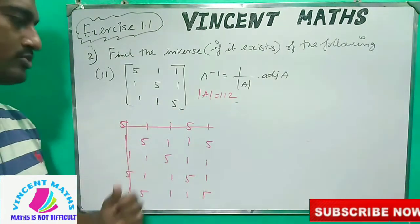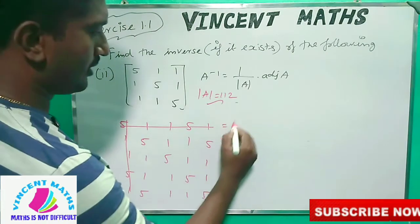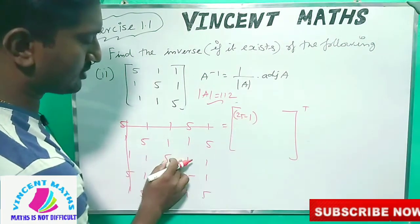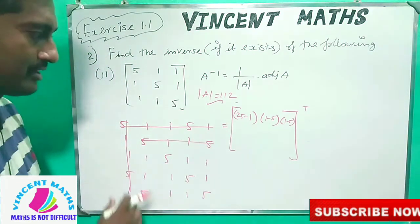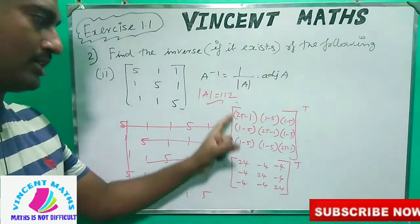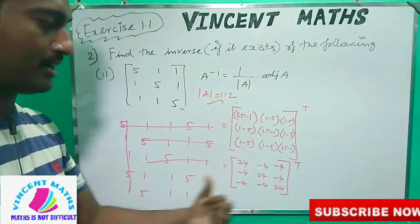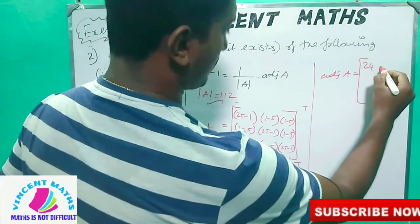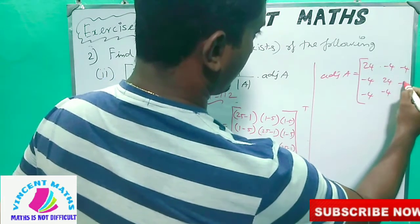Since the determinant is 112, not equal to 0, we can find the adjoint of A. We delete the row and column for each element and compute the cofactors, then transpose. The result is: 25 minus 1, 1 minus 5 minus 4, 1 minus 5 minus 4. After transposing the cofactor matrix, the adjoint of A is: [24, minus 4, minus 4; minus 4, 24, minus 4; minus 4, minus 4, 24].